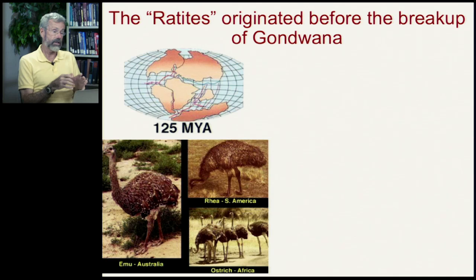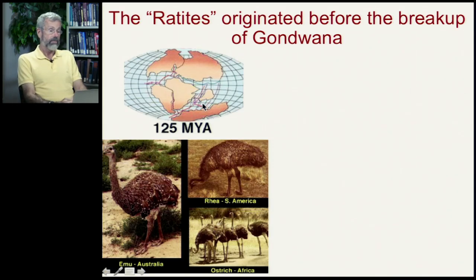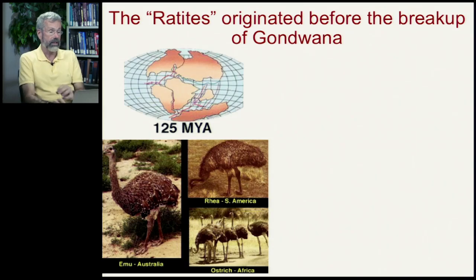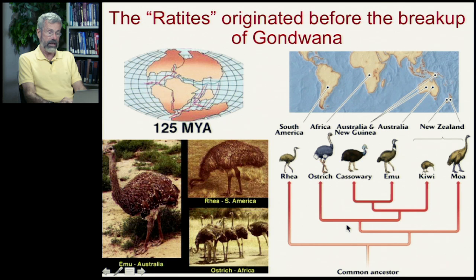We've already seen the concept of biogeography when discussing the Ratites — that monophyletic group of flightless birds that originated before the breakup of Gondwana. One ancestor could travel freely back and forth, then the continents separated, and diversification happened within each continent. This reflects the deep history and old age of this particular group — these birds have been around for a really long time, back when the continents were still connected.